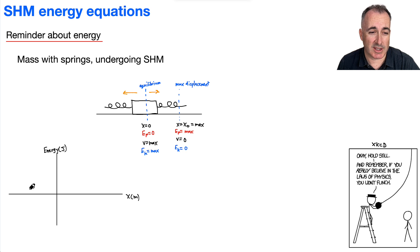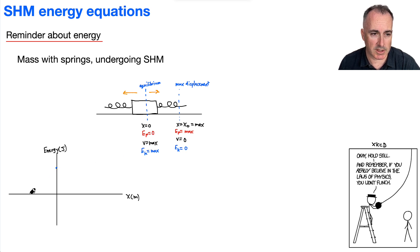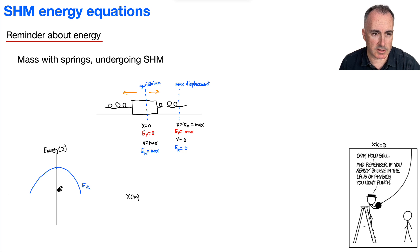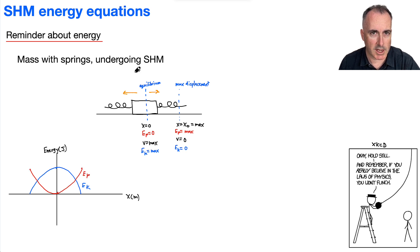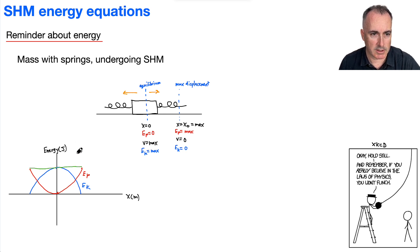Let's remind ourselves what happens with energy in terms of displacement. If blue is my kinetic energy, then at X equals zero, EK is max — so it's basically a curve like this. This will be EK. And then EP will be the opposite, something like this on each side. That'll be EP at these points here and here. And the total energy is going to be a straight horizontal line like this — that'll be ET, which is kinetic plus potential.